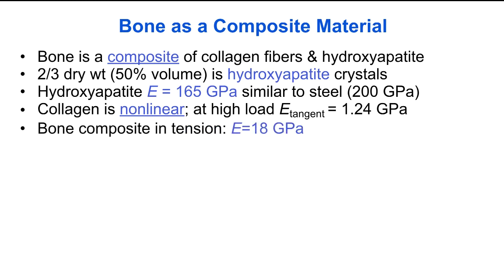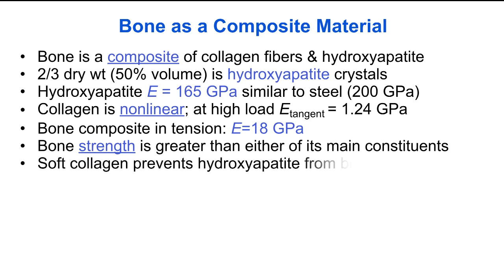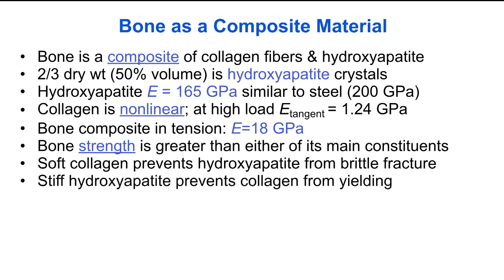The Young's modulus of the bone composite is in between that of the hydroxyapatite mineral crystals and the organic collagen fibers, and is about 18 gigapascals. However, the strength of bone is greater than that of either of its main constituents. The soft collagen prevents hydroxyapatite from undergoing early brittle fracture, whereas the stiff hydroxyapatite prevents the collagen from yielding.